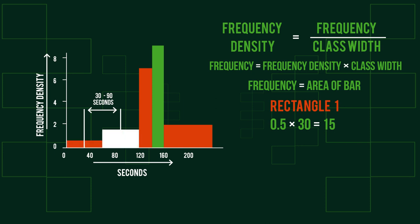Rectangle 2 has a height of 1.5 and also a width of 30 seconds, from 60 seconds to 90 seconds. 1.5 multiplied by 30 equals 45 people, so in total there are 15 plus 45, giving an estimate of 60 people.